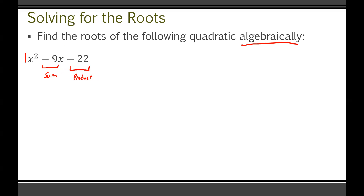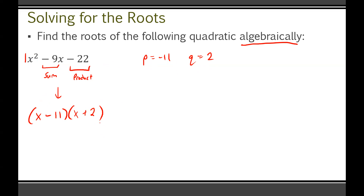The worst method here would be vertex form, because this is not in vertex form — there'd be no practical reason to change it. Using the sum-product rule: two numbers with a sum of negative 9 and a product of negative 22. Those numbers are negative 11 and positive 2, because negative 11 plus 2 is negative 9, and negative 11 times 2 is negative 22. Because it's the normal sum-product rule with an A value of 1, we can jump straight to factored form: (x minus 11)(x plus 2). That is now fully factored.